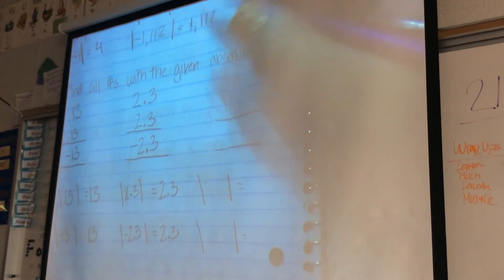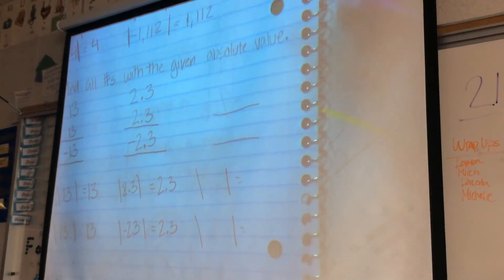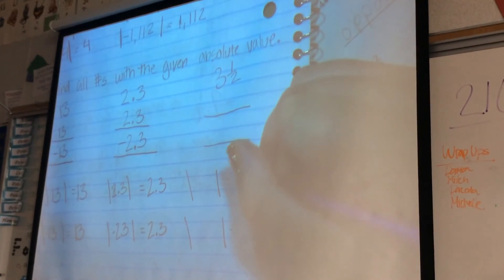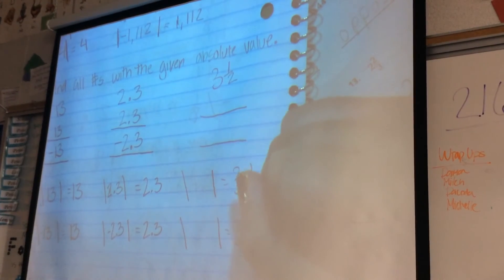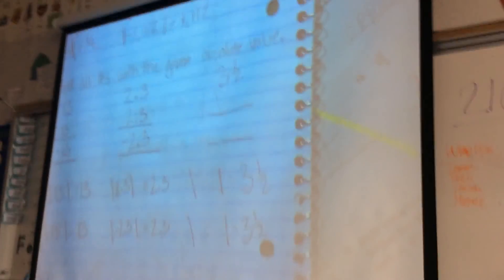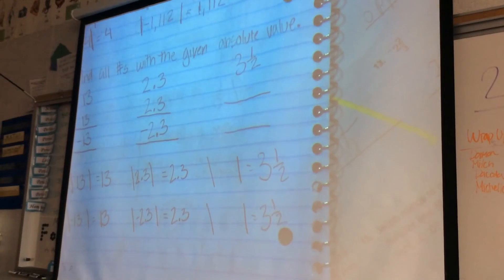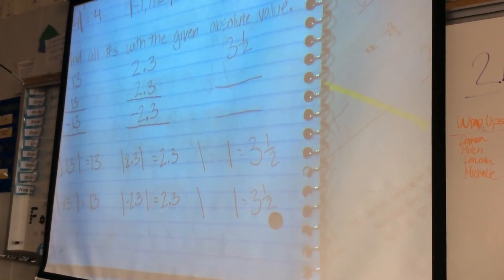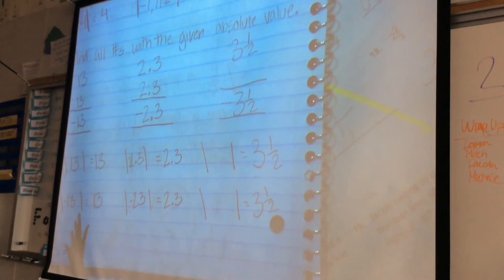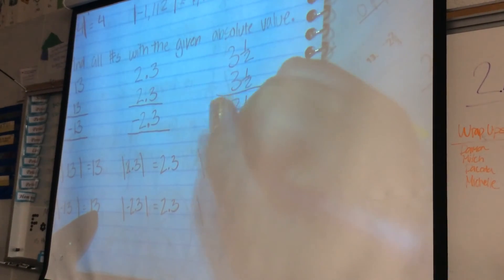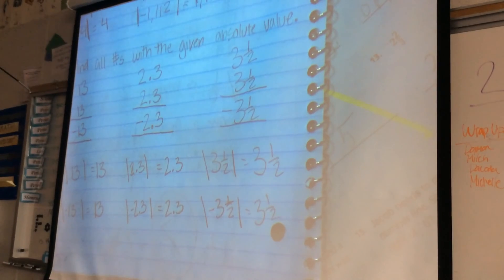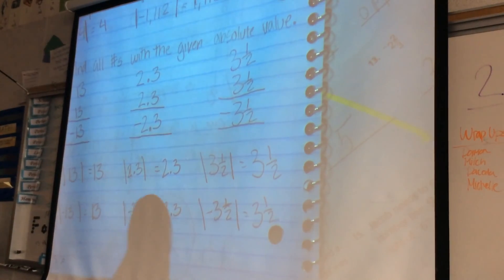We're going to do one more — talk about it with your partner. I'll give you 15 seconds and then we'll come back together. The absolute value is 3.5, so what are my two possible numbers? Negative 3.5 and positive 3.5. The rational numbers stay the same — the only difference is that we include the positive or negative. That's a great observation.